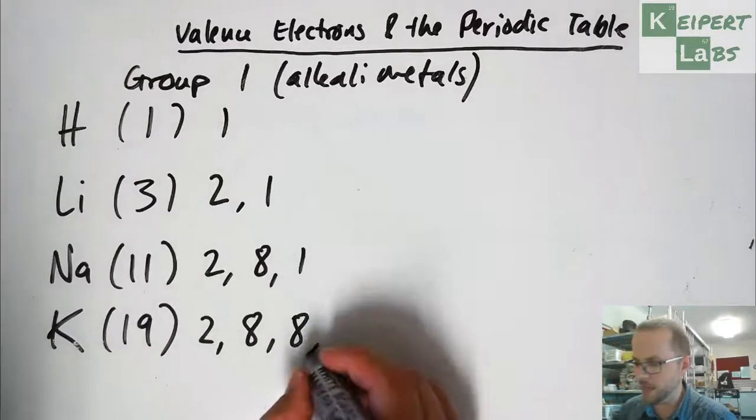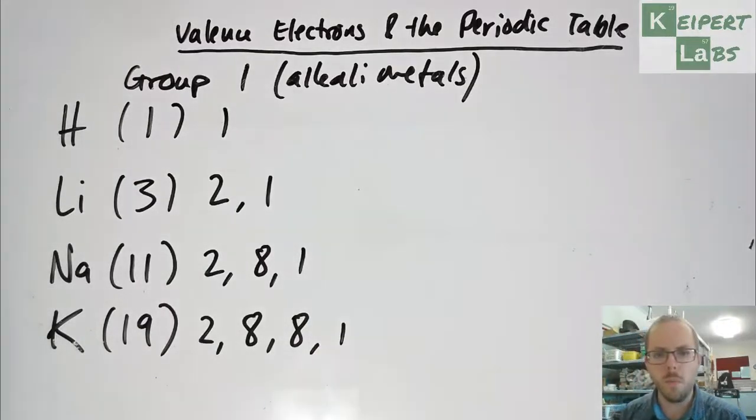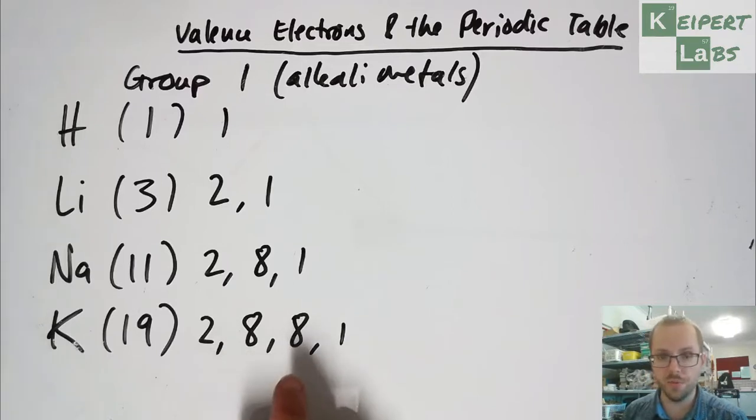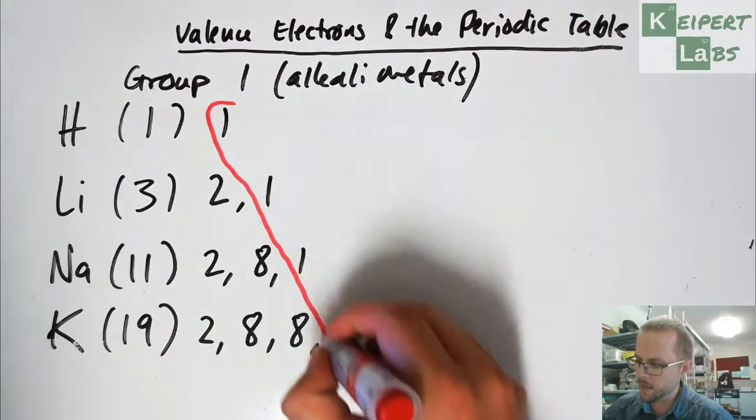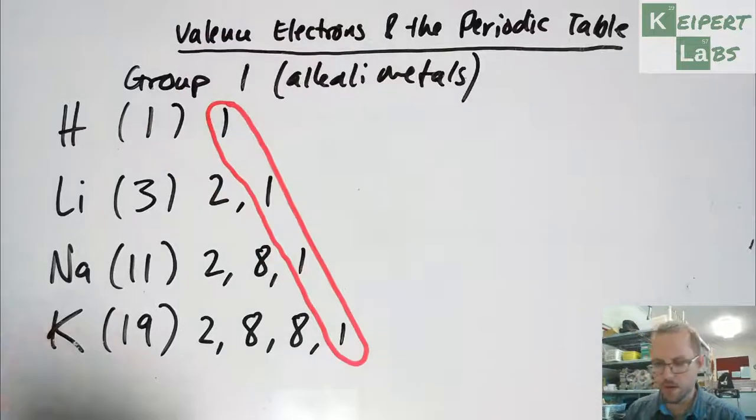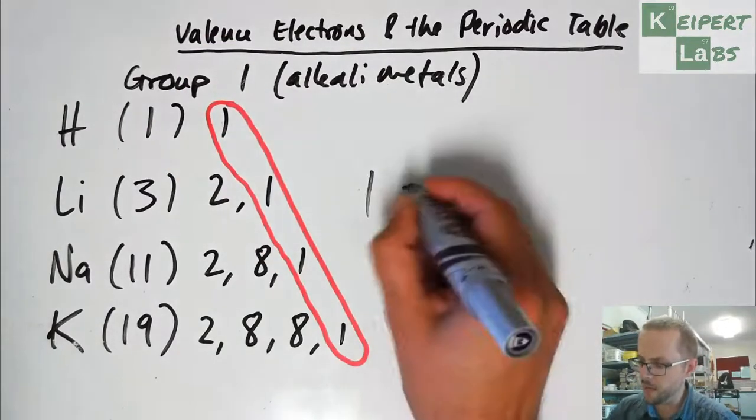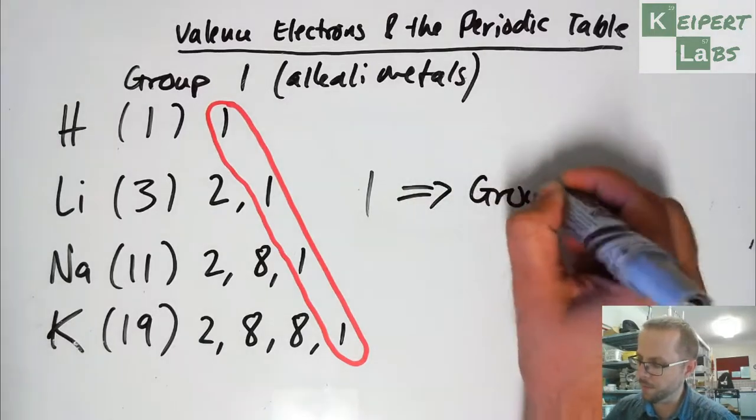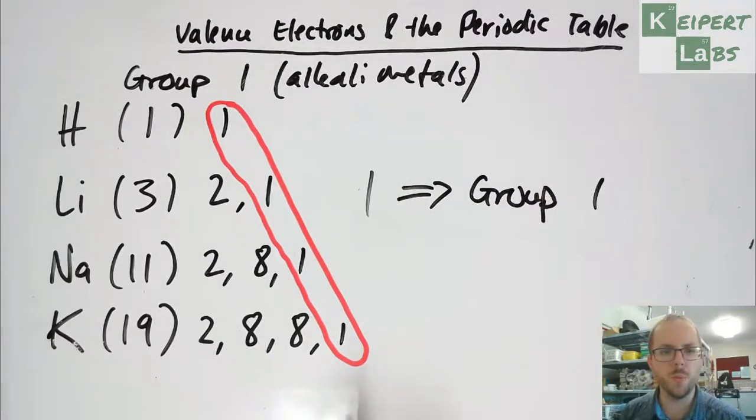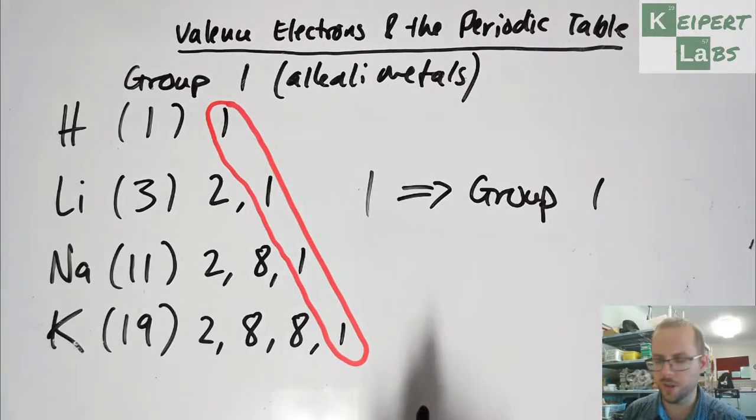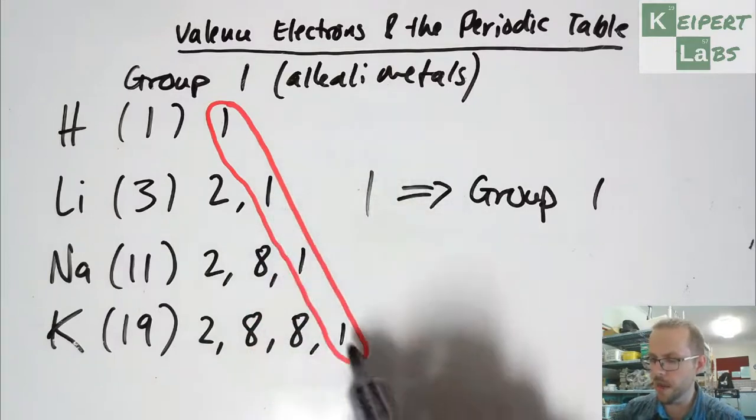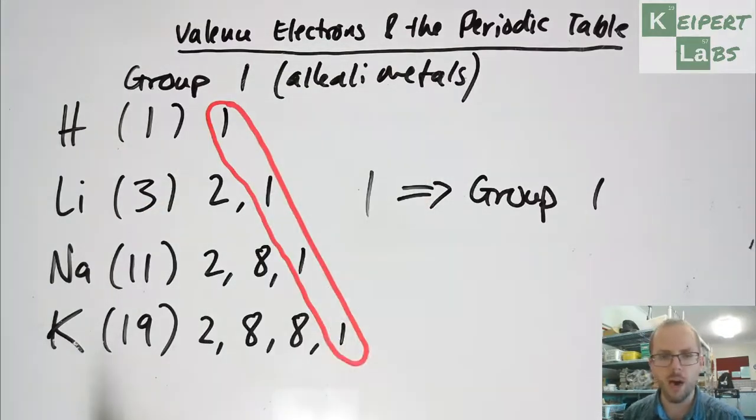We end up with two, and then eight, and then eight, and then one. Now, as opposed to two, eight, and then nine, which would seem logical, but bear with me here. So what we notice here is that the last number that I write on each of these ones is one. And so that connects with our idea of group one. So we call group one elements all have a one as their last one. One valence electron is this kind of edge ones, our valence electron, our highest energy electrons.